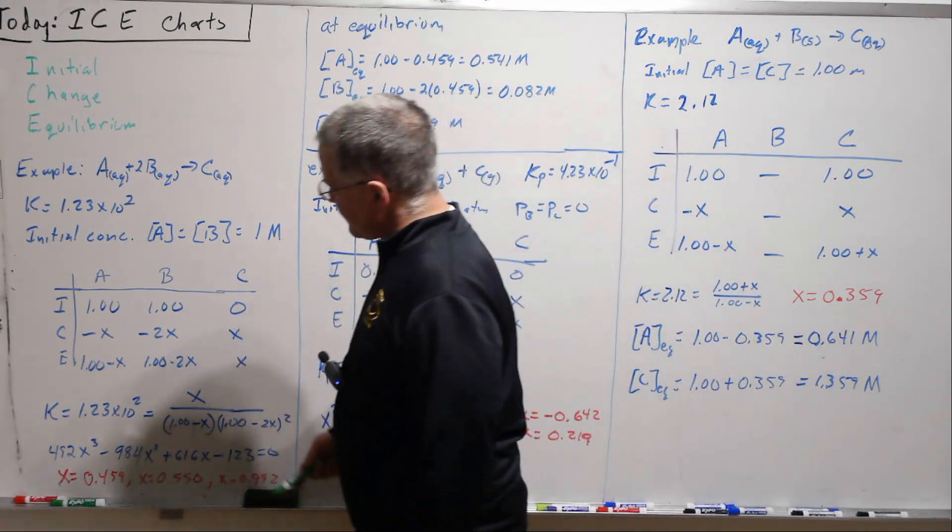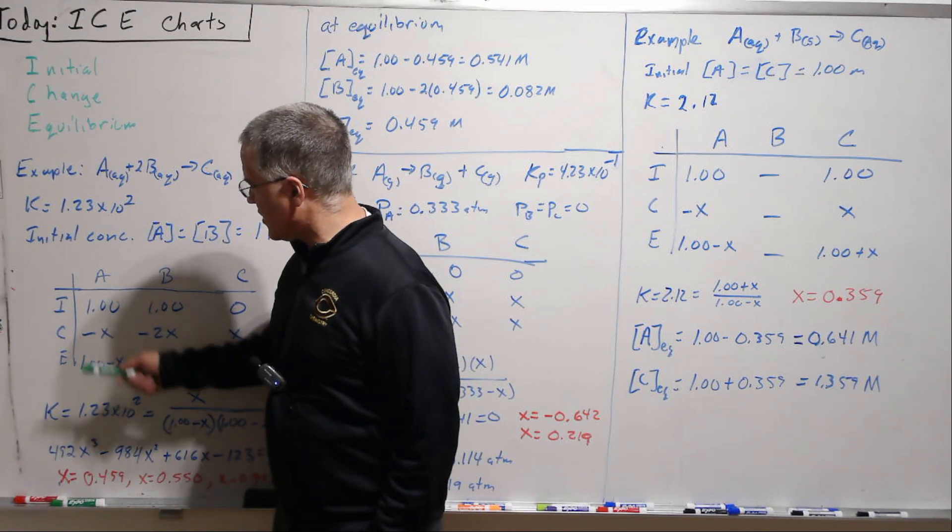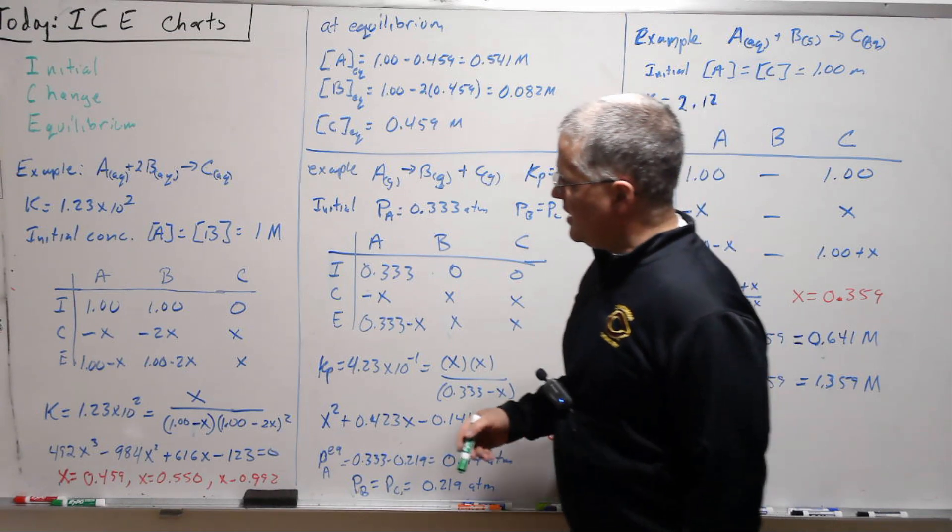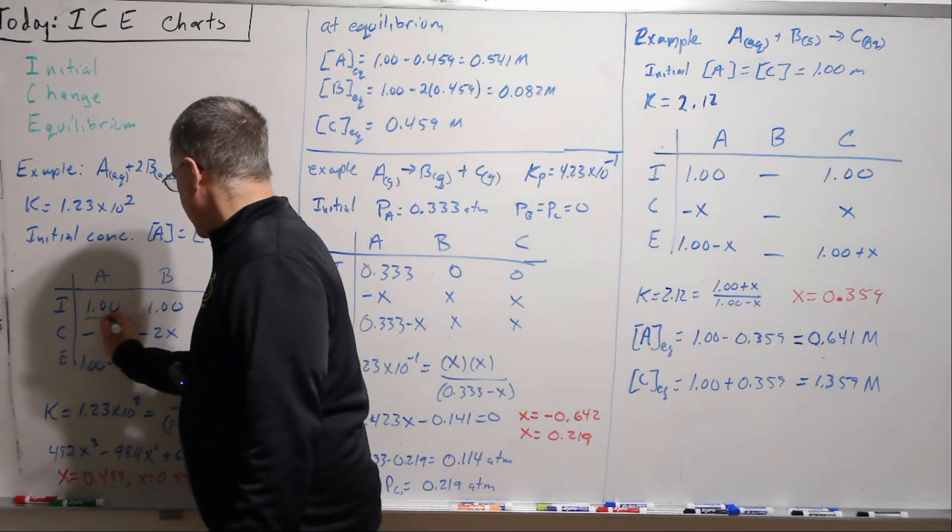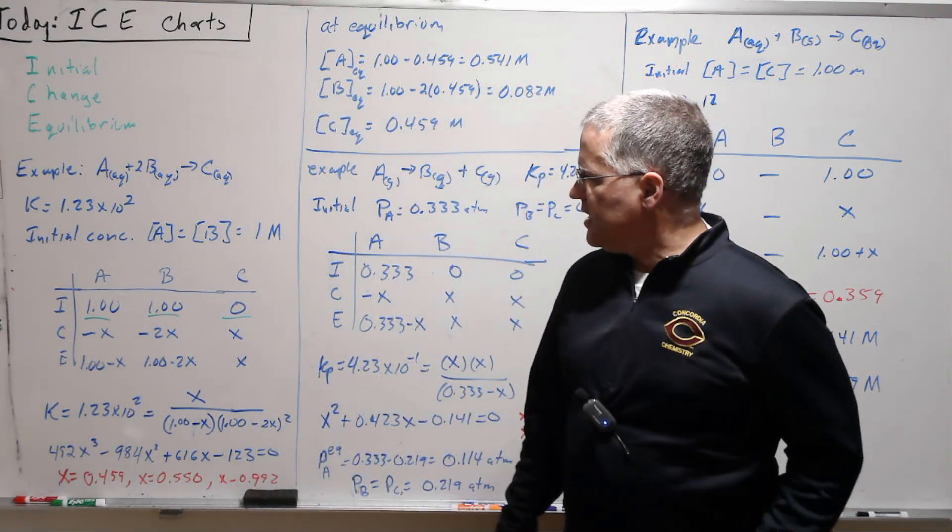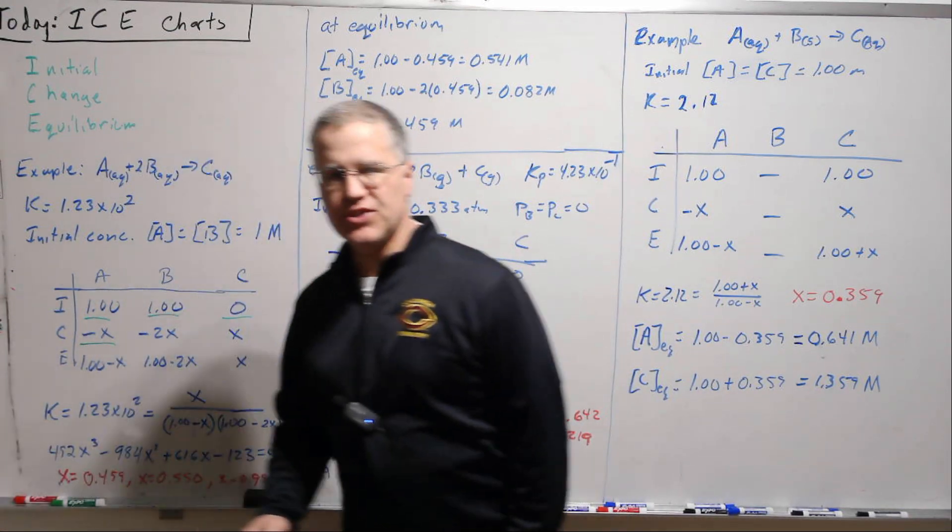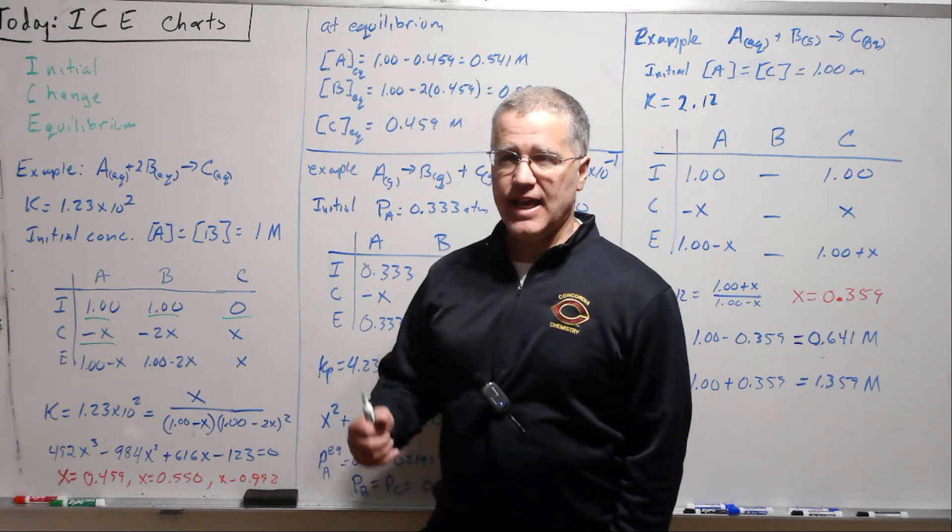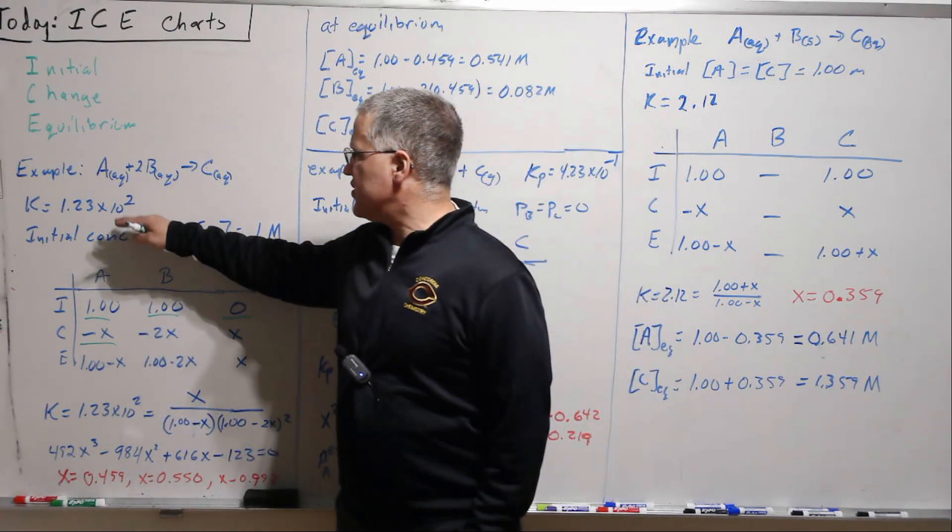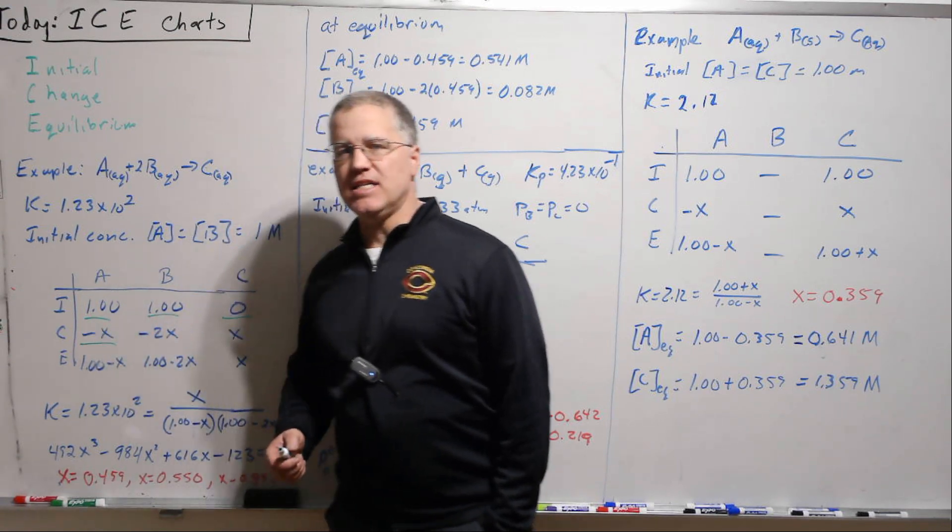So how we set up the ICE chart is we write the letters ICE down the side, we make a grid down this column, and then A, B, C as headers for columns, and then we say in our initial 1, 1, 0. So that we just take what's given to us there, and then we say, okay, I'm going to let the unknown variable X represent my change, and I'm going to want it positive. I mean, you could do whatever you want here, but we know this is a reaction that's going to reduce A.